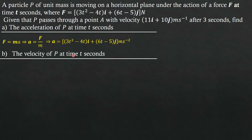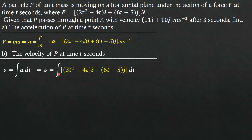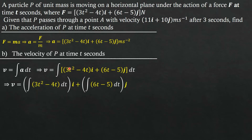Part B asks us to find the velocity of particle P at time T seconds. We know that velocity equals the integral of acceleration with respect to time, because acceleration is the derivative of velocity with respect to time. So we integrate the acceleration — (2T² − 4T)i + (6T − 5)j — with respect to time. We separate the i and j components and integrate separately. Integrating 2T² gives 2T³/3... actually integrating 3T² gives T³.